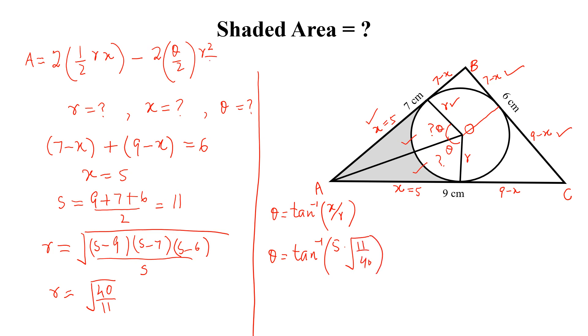Now, we will put values in this formula. So, the shaded area is equal to 5 into 2 into 40 by 11 minus 40 by 11 R square into tangent inverse of 5 into square root of 11 by 40. If you simplify this, we will get area equal to approximately 5.1476 centimeter square. And this is the required answer.